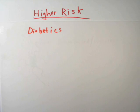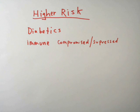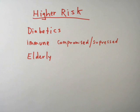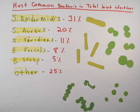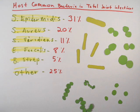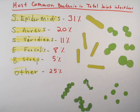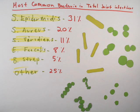Patients who are diabetic, immunocompromised or immunosuppressed, or elderly are at an increased risk of infection. Here is a list of the most common infectious bacteria and their rates of occurrence.